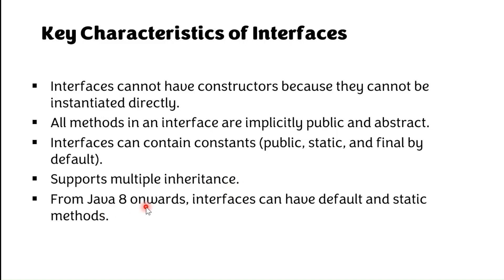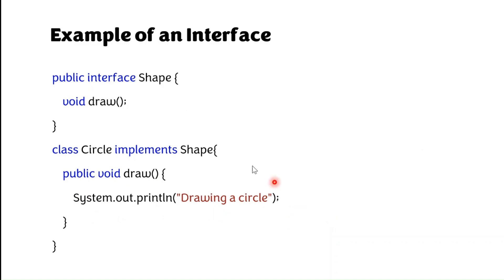From Java 8 onwards, interfaces can have default and static methods, which have been implemented in the interface. Look at this simple example: an interface with an interface name, which consists of an abstract method.